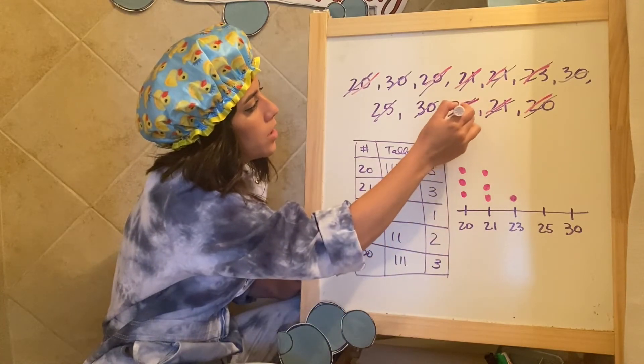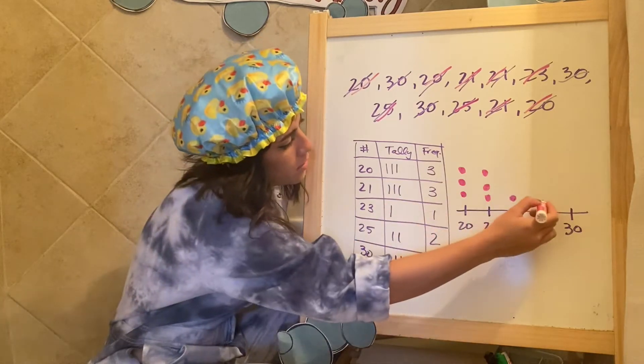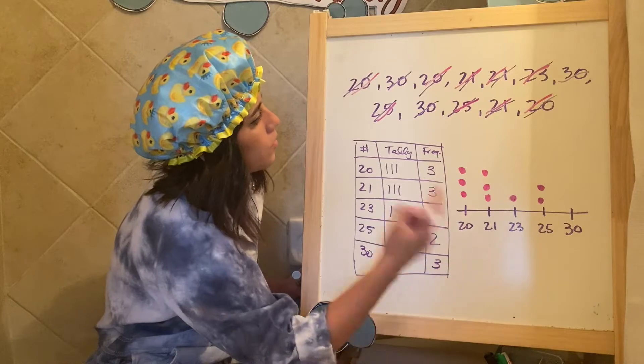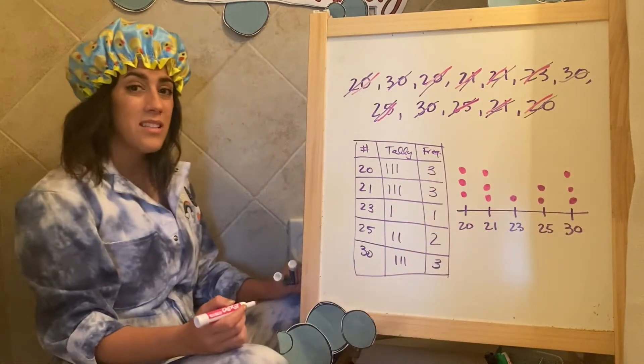25. I had one, two, two. Did I have two? Yes. Right. And 30. I had one, two, three. So it's just another way to see data.